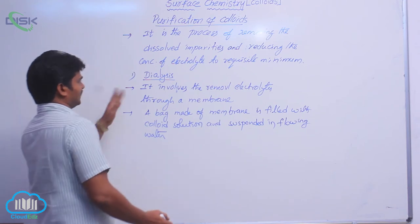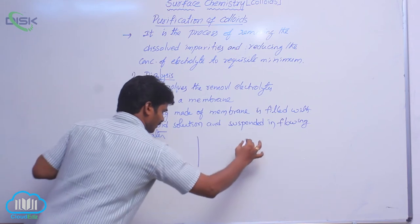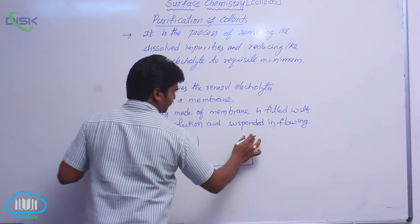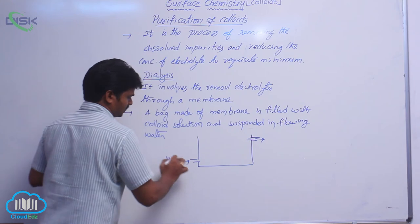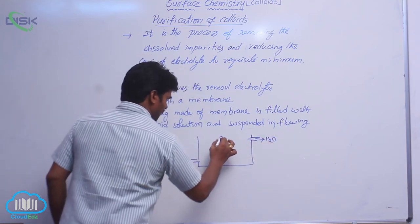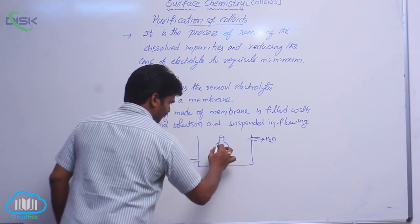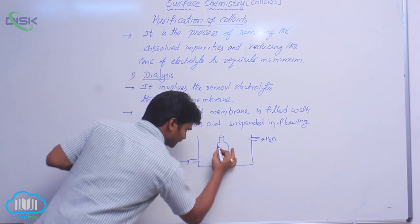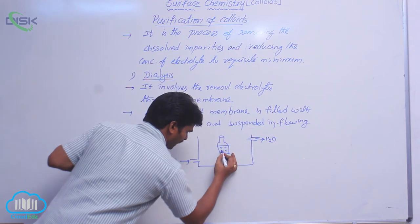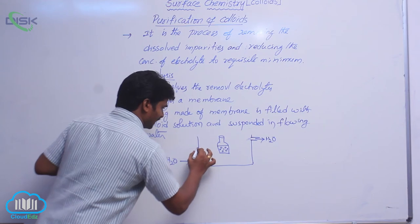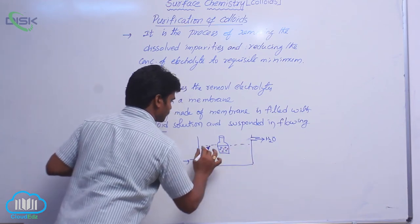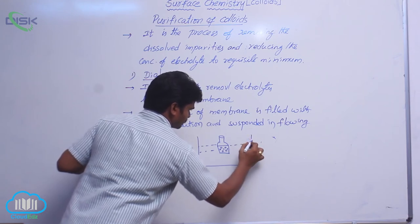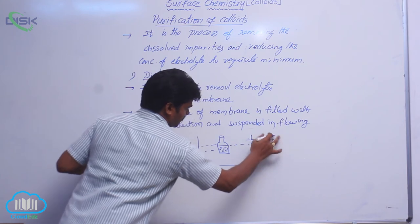Now let us see the diagram for this dialysis process. This is the vessel in which there is flowing water. Water is flowing into the chamber and flowing outside the chamber — H₂O on both sides. Here, a bag made of membrane is suspended inside. This bag is filled with colloidal solution, so inside there are colloidal particles.